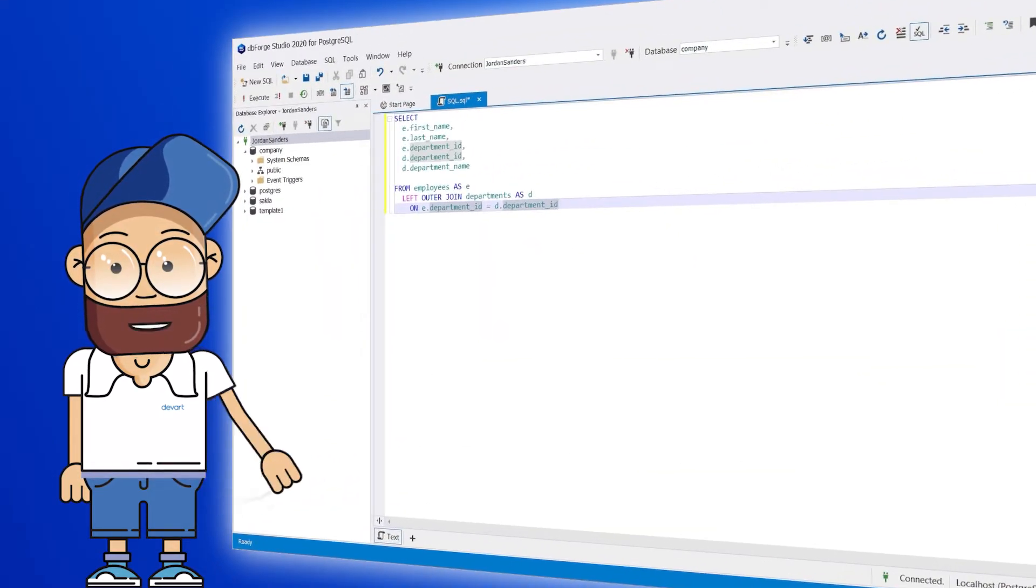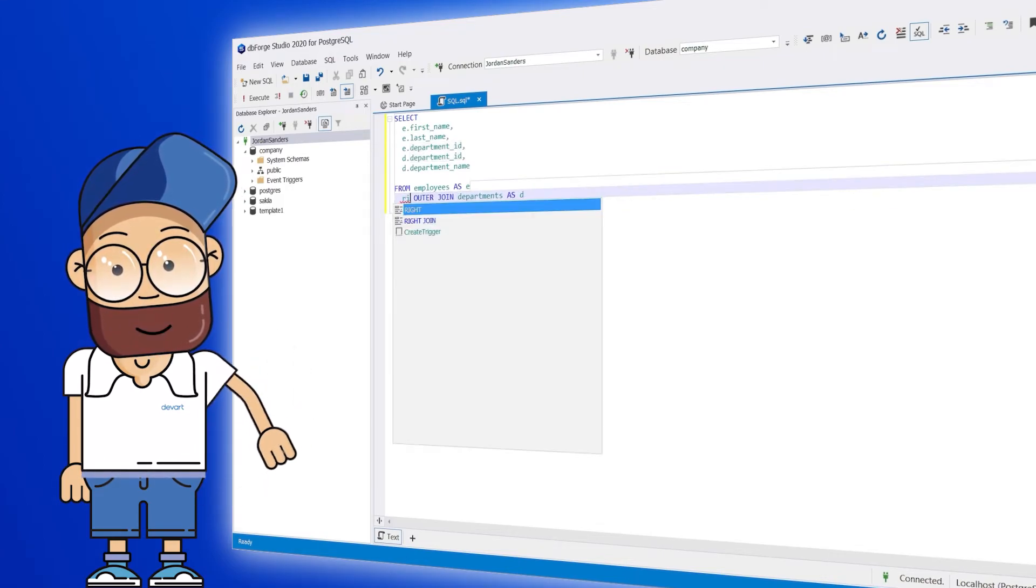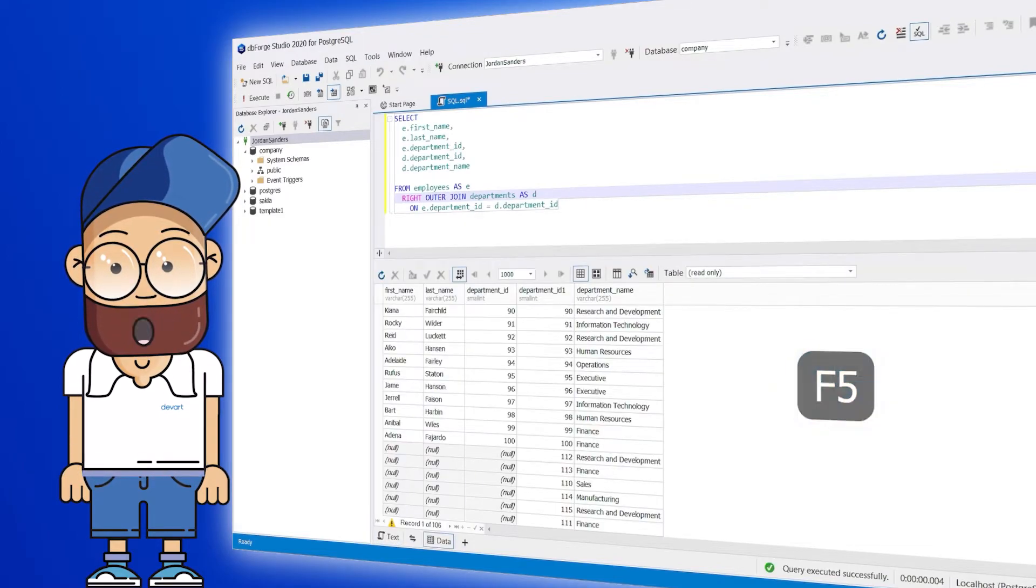Now with the help of dbForge Studio for Postgres, we will create a query to find all employees and their departments, and at the same time the departments with no employees. Let's run the query and see the result.